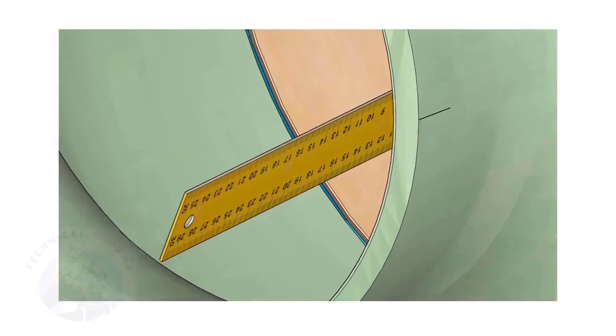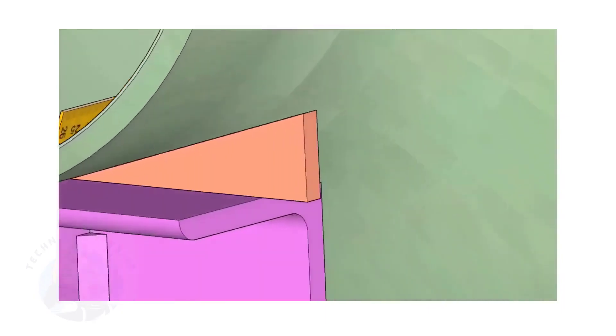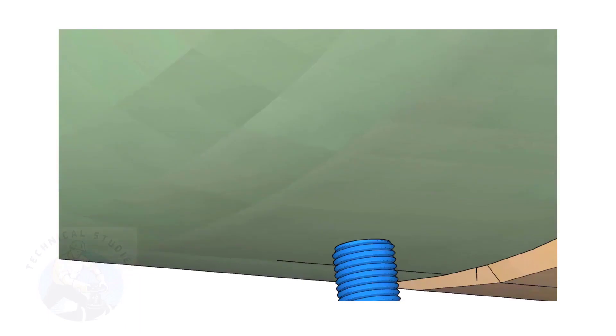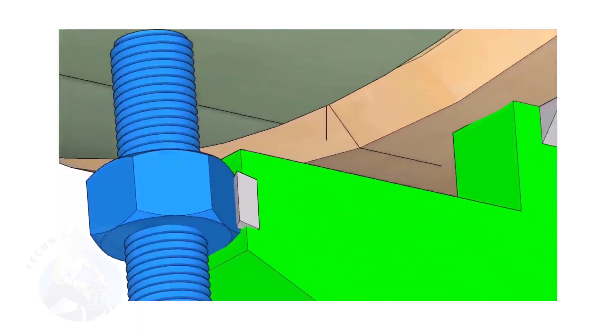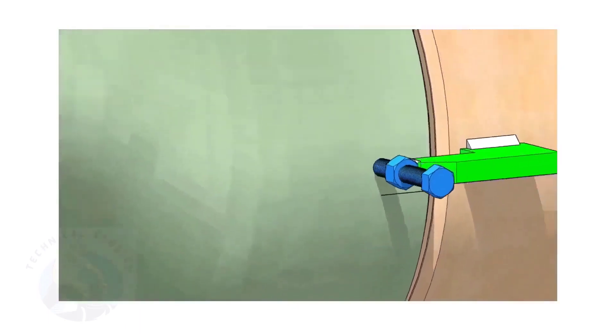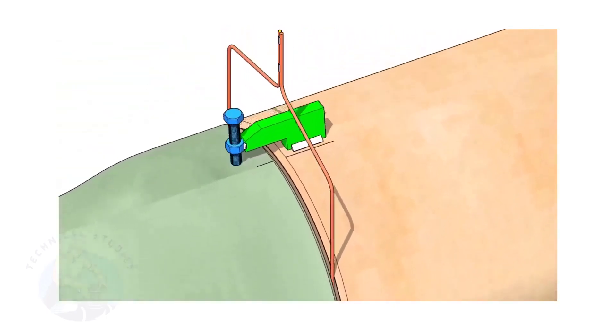By adjusting the jack bolts, correct the overlap of the joint inside the pipe. Now, tack weld on the top side of the joint.